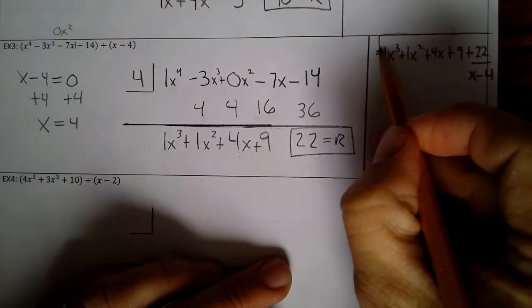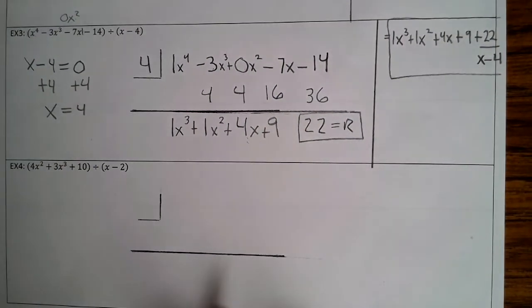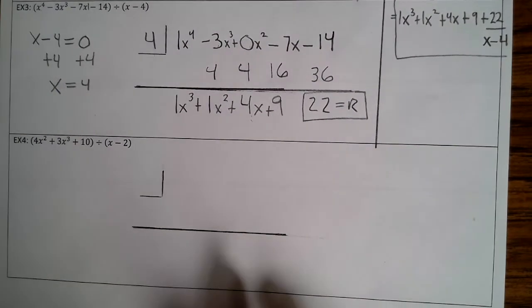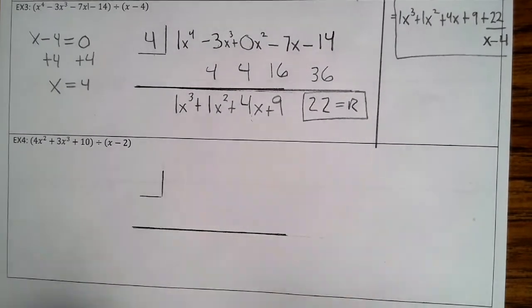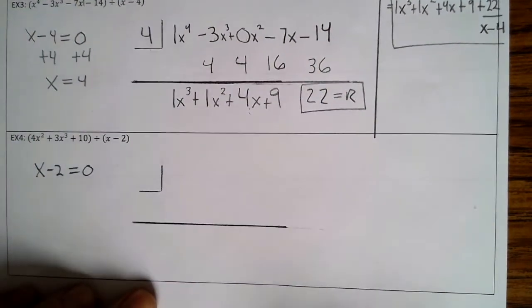All right. Let's take a look at the last example, example number 4. All right. So first things first, we set x - 2 equal to 0. So we add 2 to both sides. So x equals 2, and that's your number here.